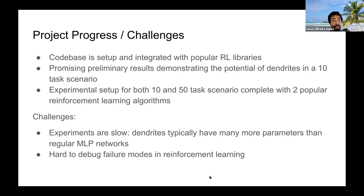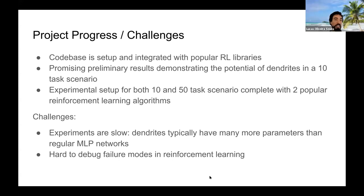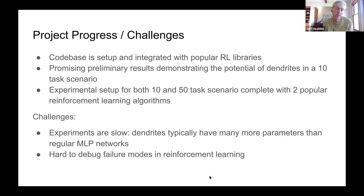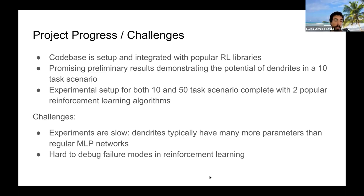The biggest challenge is that it took nine days to run one 50-task experiment, because we can't run it across multiple instances in parallel. We do have a plan for solving the speed issue — both Akash and Lucas are actively working on it, though it may not be solved in a very short timeframe. We have ideas on how to speed it up.